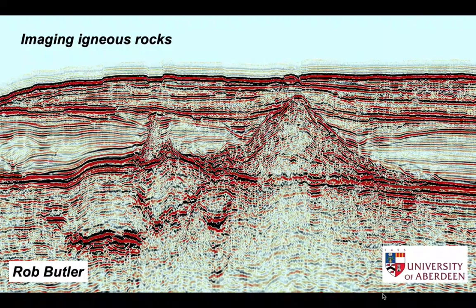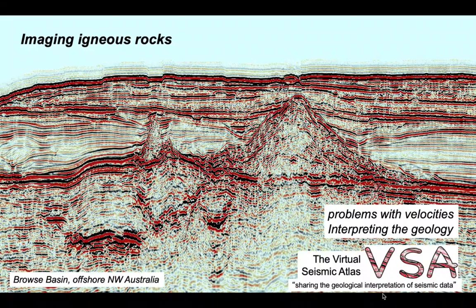Igneous rocks are common constituents in many sedimentary basins, and seismic reflection profiles can give great insight into their geometry and stratigraphic significance. However, the presence of igneous rocks in sedimentary basins can generate significant imaging problems because they generally have higher seismic velocities than the surrounding sediments. We'll look at some of those imaging problems, how they can be dealt with through better seismic processing, and then how we might interpret the geology of igneous rocks as imaged on seismic profiles.